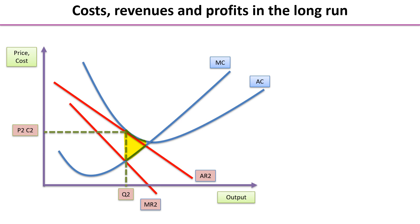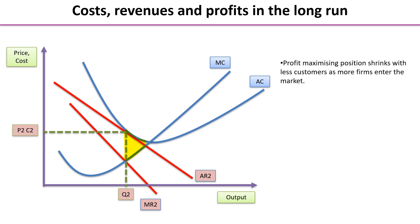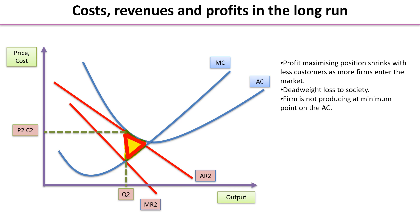We've simplified that graph by removing the original average and marginal revenue curves, retaining only the AR2 and MR2 curves so you can see what's happening more clearly. The profit-maximising position has shrunk as there are fewer customers per firm. We can also see that yellow triangle in the centre, which shows the deadweight loss to society — the firm is not producing at the minimum point on the average cost curve.